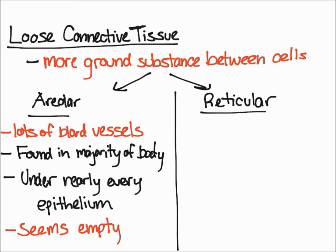Since areolar tissue has a lot of blood vessels, it can provide nutrition to the epithelium and remove waste from the epithelium. In addition, lots of white blood cells can move in and out of areolar tissue to check for infection and make sure everything is okay. Finally, areolar tissue seems to have a lot of seemingly empty space, but the main thing to take away is that it's highly vascularized — meaning it has a lot of blood vessels.